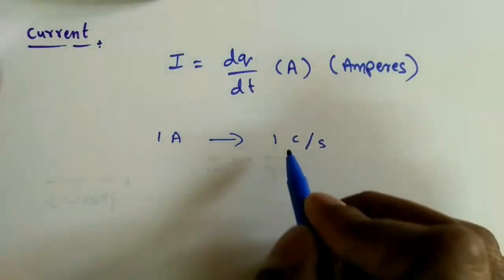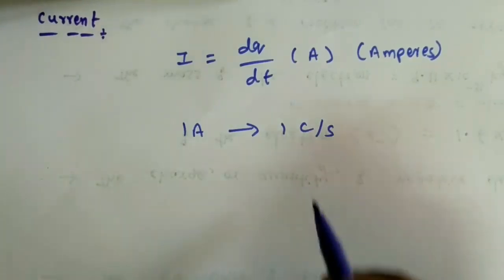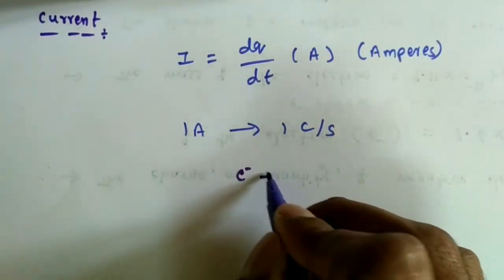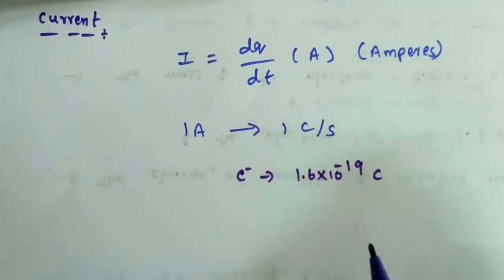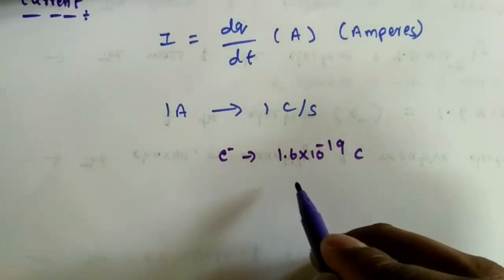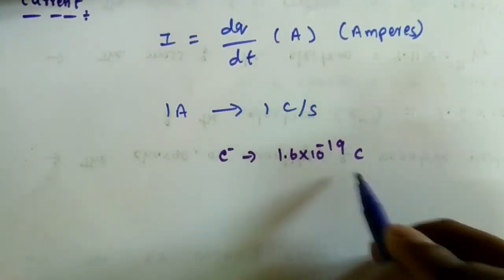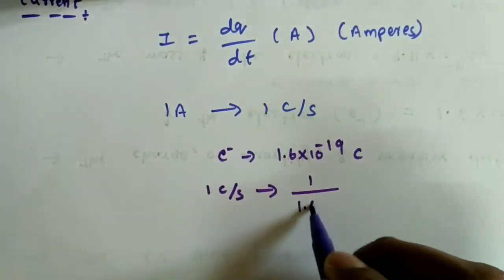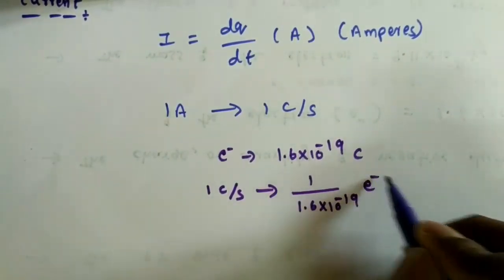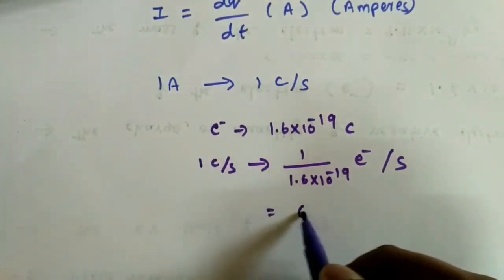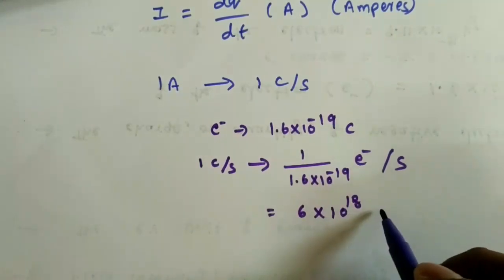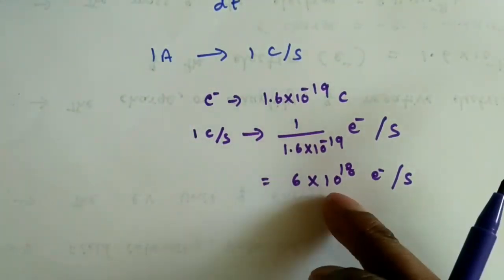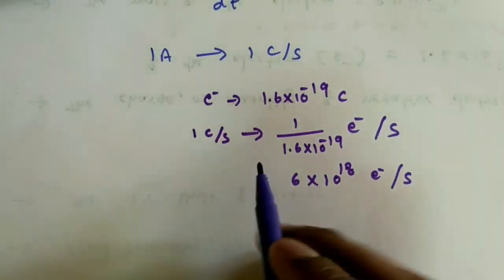How many electrons must flow to produce one ampere of current? To produce one ampere, there must be a net motion of one coulomb per second. Since one electron charge is 1.6 × 10⁻¹⁹ coulombs, to make one coulomb we divide: 1 ÷ (1.6 × 10⁻¹⁹) = 6 × 10¹⁸ electrons per second. So to produce 1 ampere, there must be a motion of approximately 6 × 10¹⁸ electrons per second.